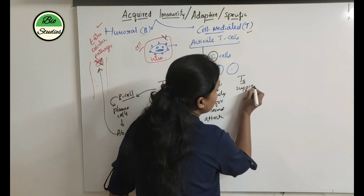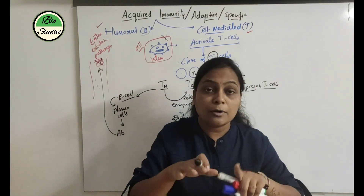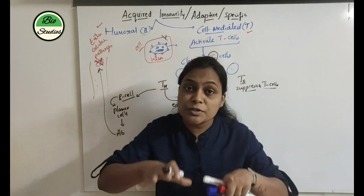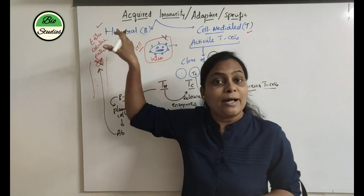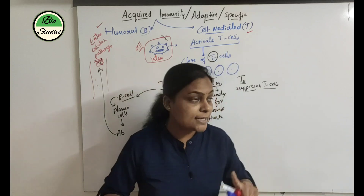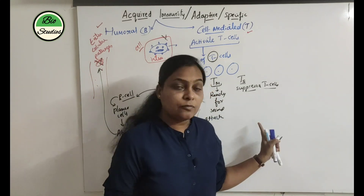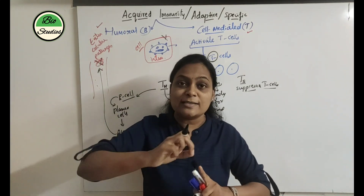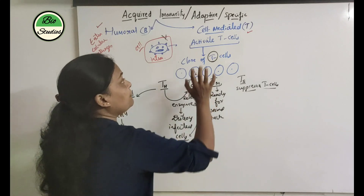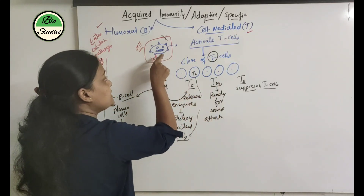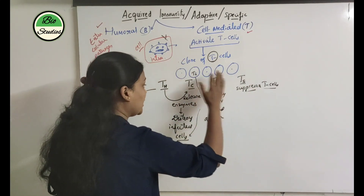TS cells are called suppressor T-cells. Suppressor T-cells regulate the immune response — when the pathogen attack is over, they suppress the immune response. So we have suppressor T-cells, TM memory cells, TC cytotoxic cells, and TH helper cells. Cell-mediated immunity helps destroy infected cells, with T-cells differentiating into each functional type.